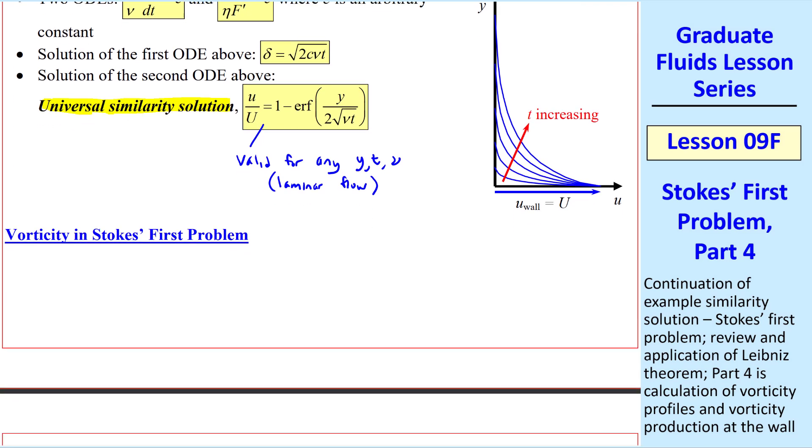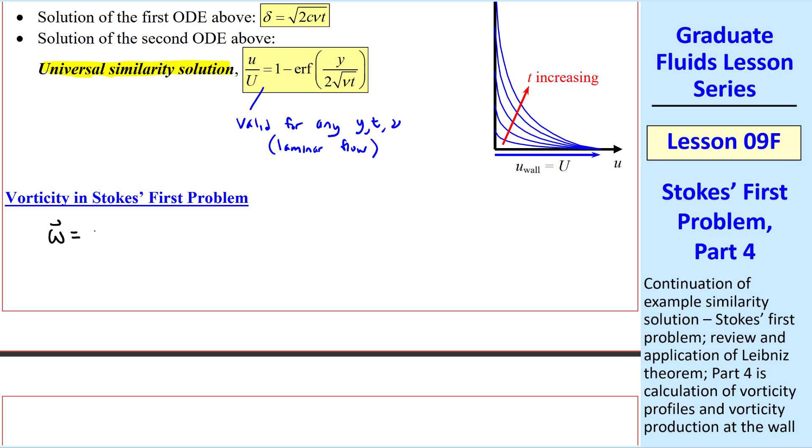Now let's look at vorticity in this problem. The vorticity vector is zero, zero, omega z, since our flow is in the xy plane only. But you may recall that omega z, in Cartesian coordinates, is del v del x minus del u del y, and v equals zero by continuity, so omega z is simply minus del u del y. So we need to plug in u from up here into this equation, taking the y derivative.